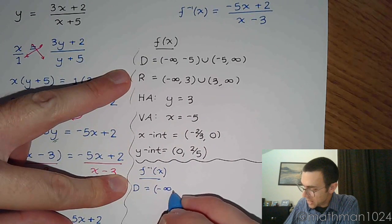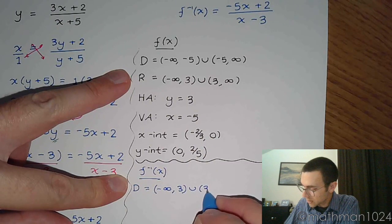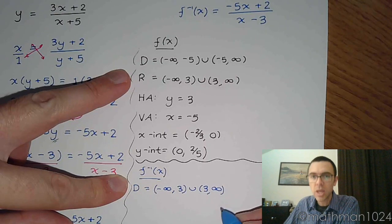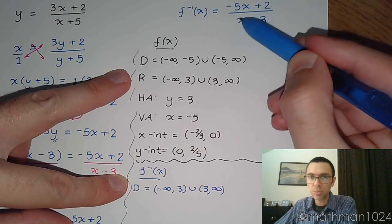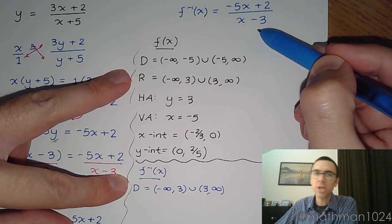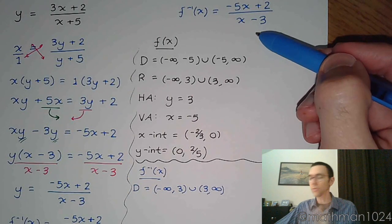So his domain is going to be everything but 3. And when you look at this function, you understand why it's everything but 3, because 3, when you plug it in here, would give you a denominator of 0, which makes the expression undefined. So everything but 3.